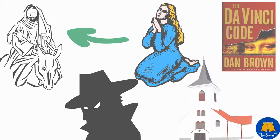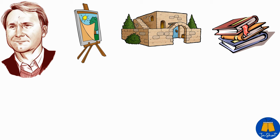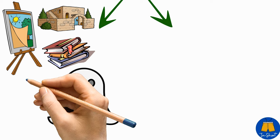The writer claims early in the book that all descriptions of artwork, architecture, documents, and secret rituals in this novel are accurate. This claim is twofold. It could mean that the descriptions are separate from the work of fiction, and readers could enjoy it guilt-free.